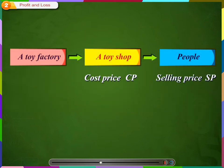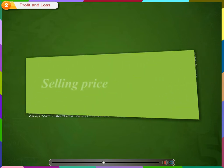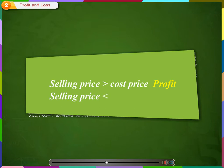Note that in the first case the selling price is higher, and in the second case it is lower. So we can say that if the selling price is greater than the cost price, then it is a profit. Whereas, if the selling price is less than the cost price, then it is a loss. In short, cost price is called CP and selling price is called SP.